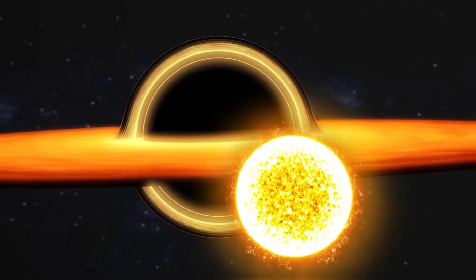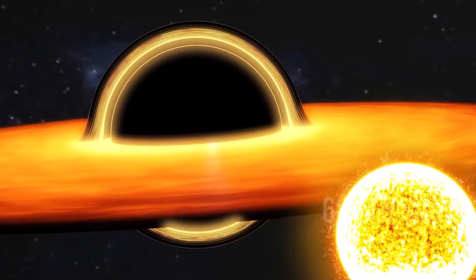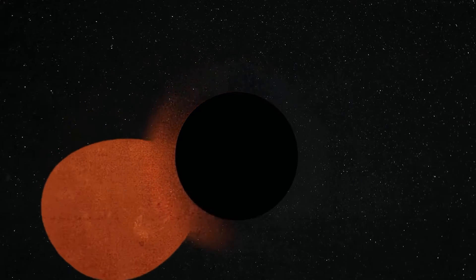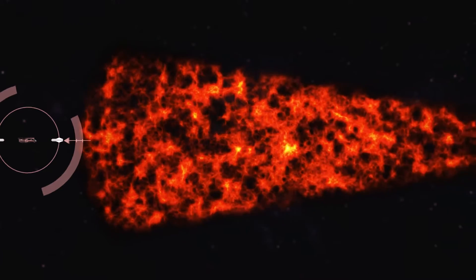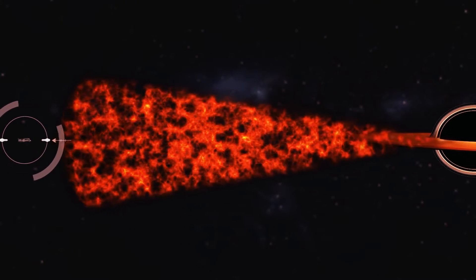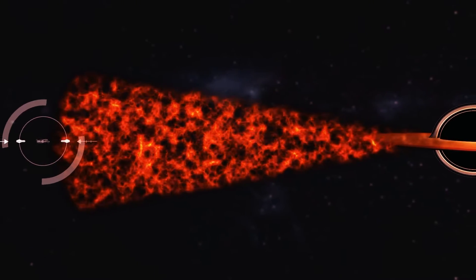One of these stars is the companion of Gaia BH1. Its motion is erratic, indicating that something massive and unseen is pulling on it gravitationally. The Gaia measurements suggested that a black hole could be the tugger, but more data was needed to be certain.